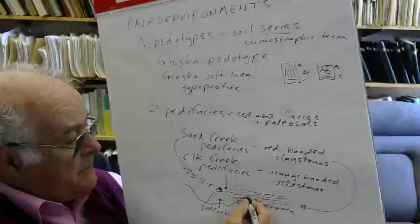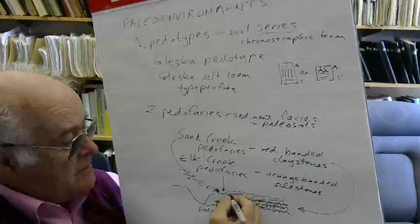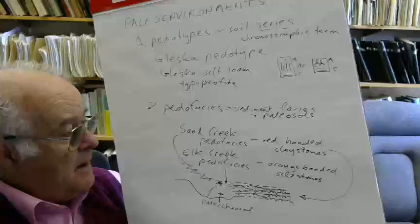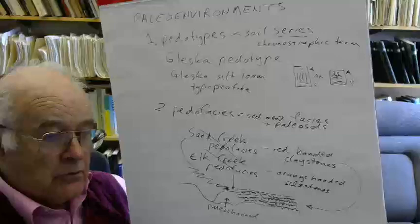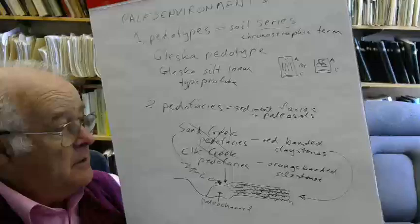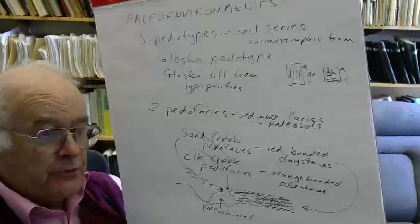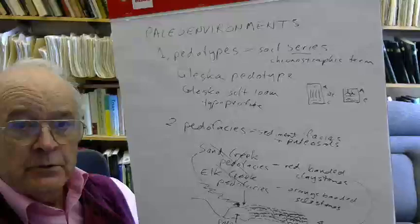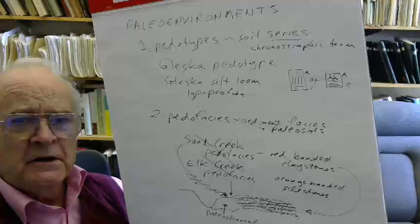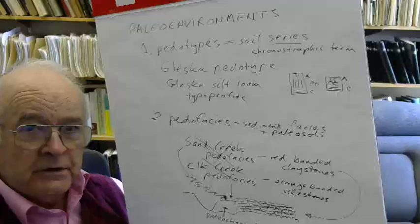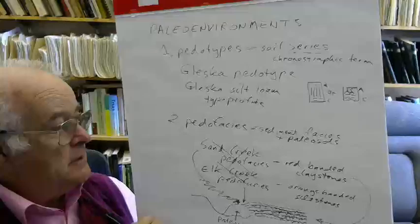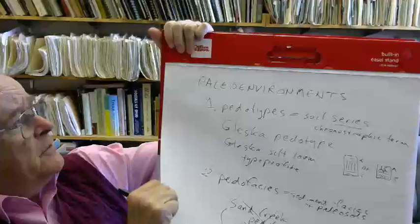And their idea was that we should name paleosols as a distinct kind of sedimentary facies. You're probably familiar with the idea of sedimentary facies. A facies is an informal unit of rock which is used to interpret it. They actually named their facies. They were working in the Eocene rocks of the Willwood Formation in Wyoming. They had a Sand Creek facies or Sand Creek pedofacies, and they also had an Elk Creek pedofacies.